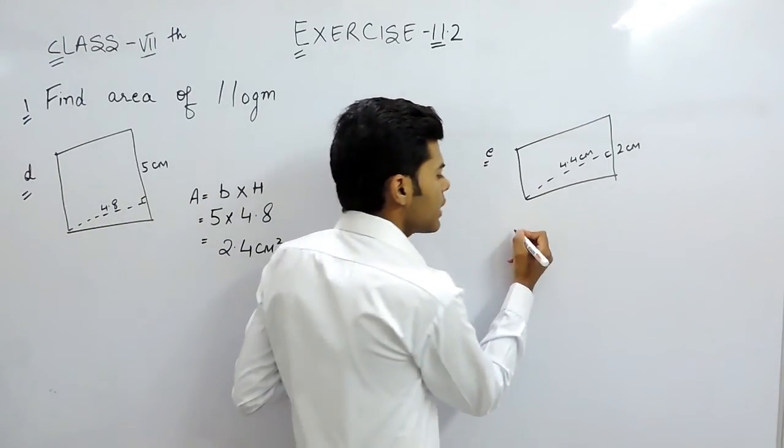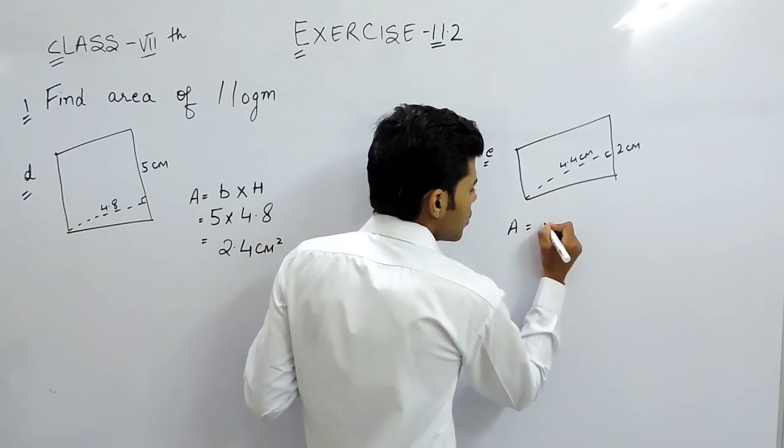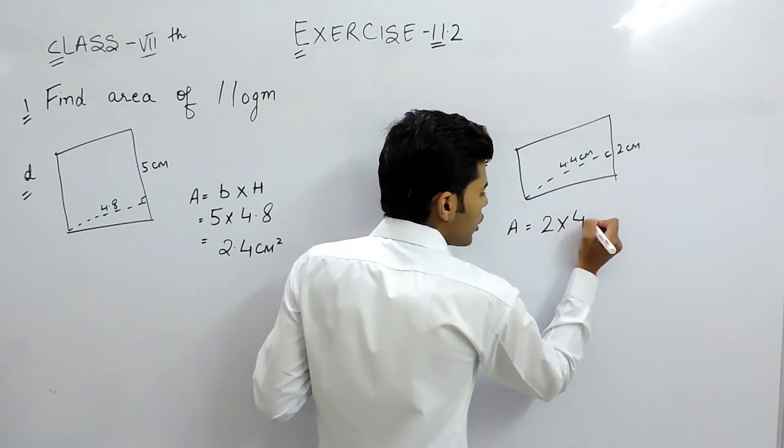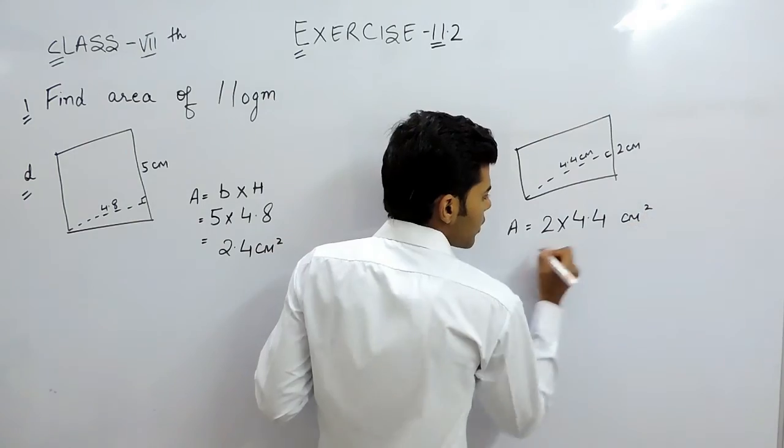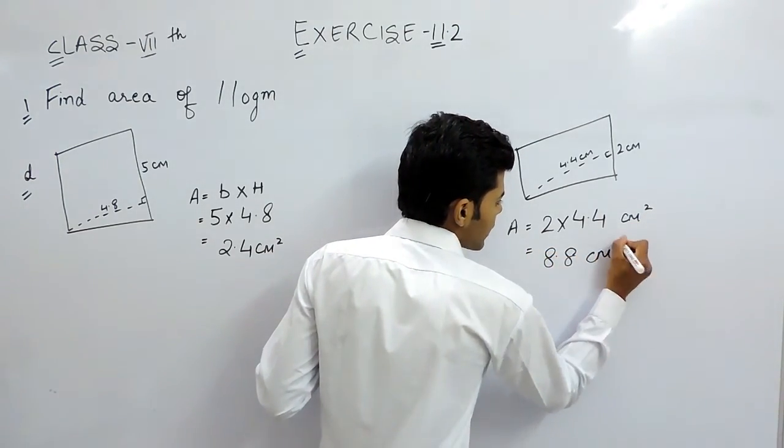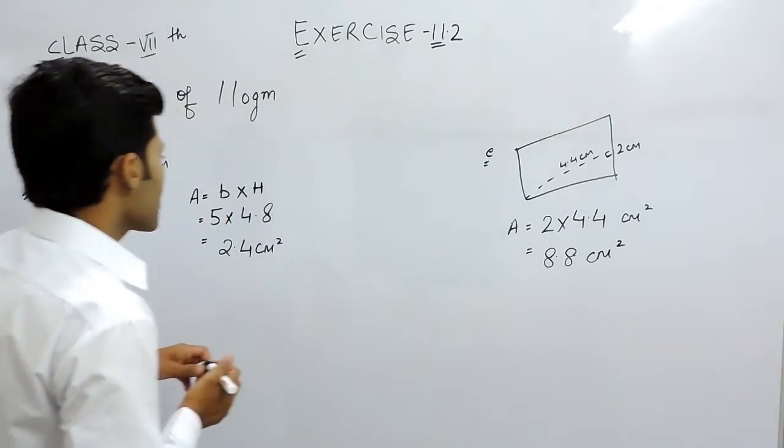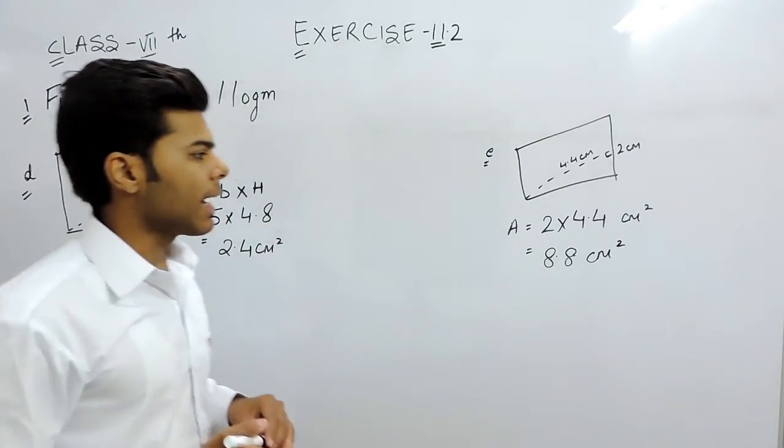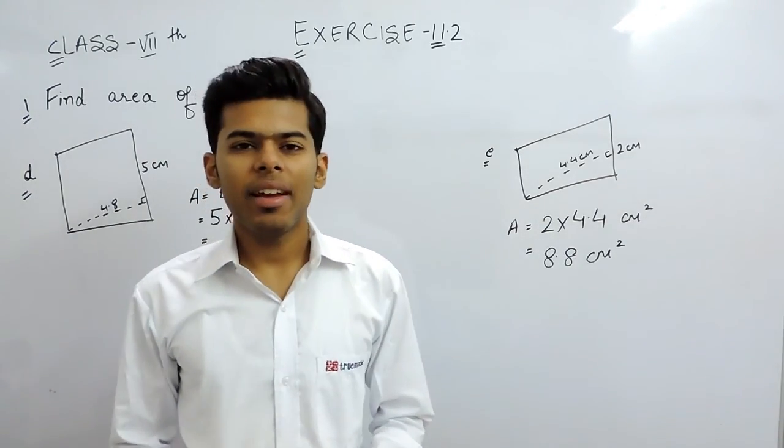And in the last part, area will be equal to 2 multiplied with 4.4 cm², that will be 8.8 cm², because area is base multiplied by height. So this is how you can do this question. Thank you.